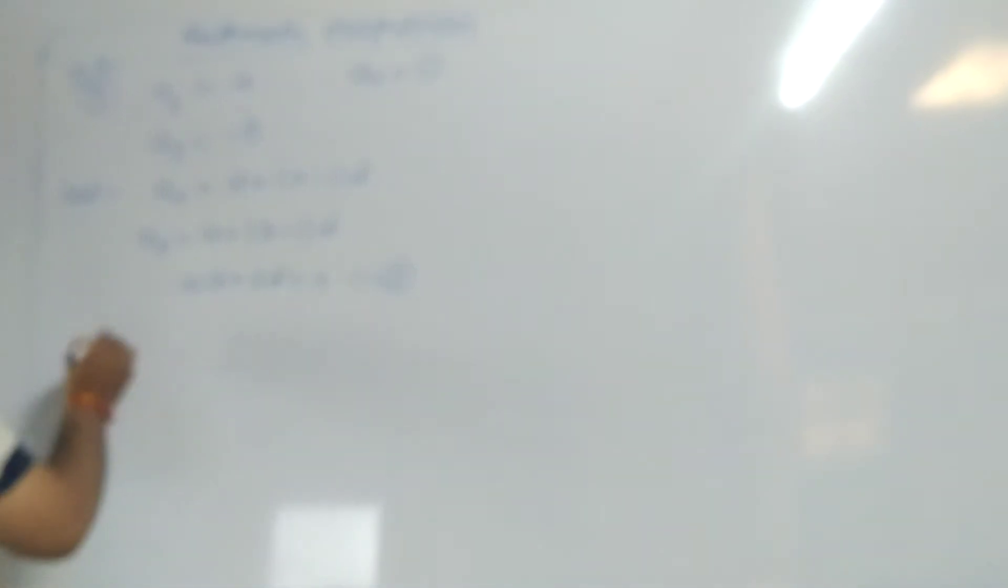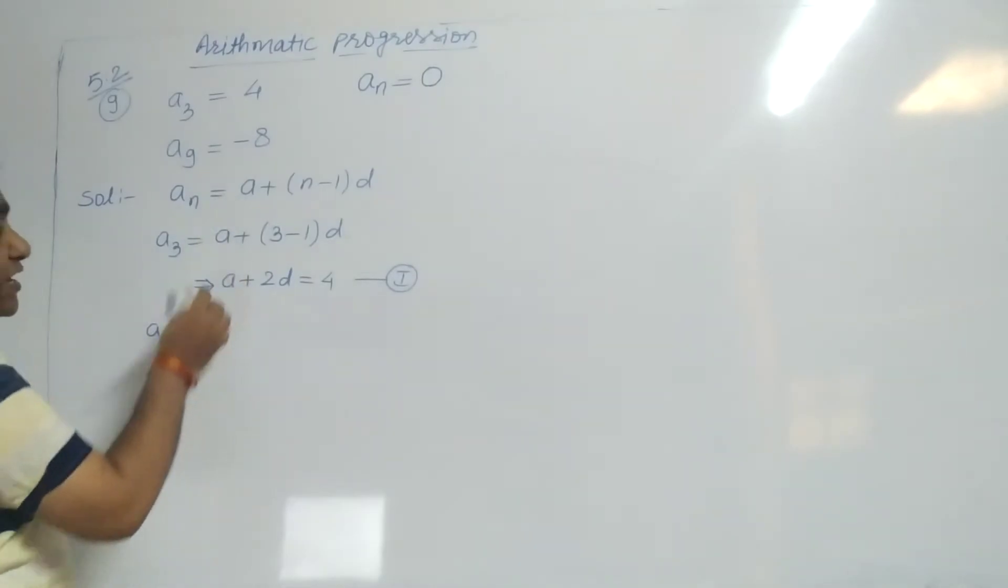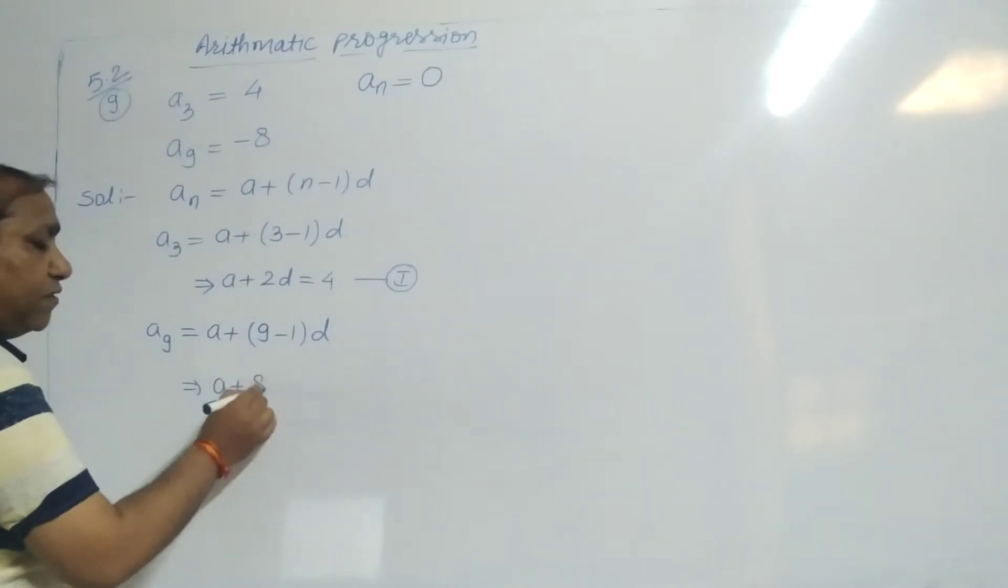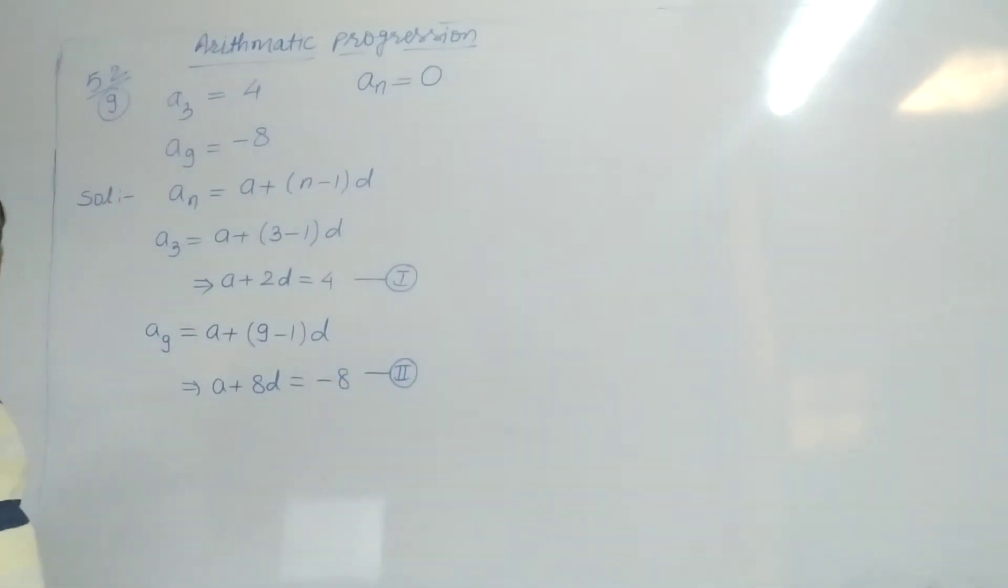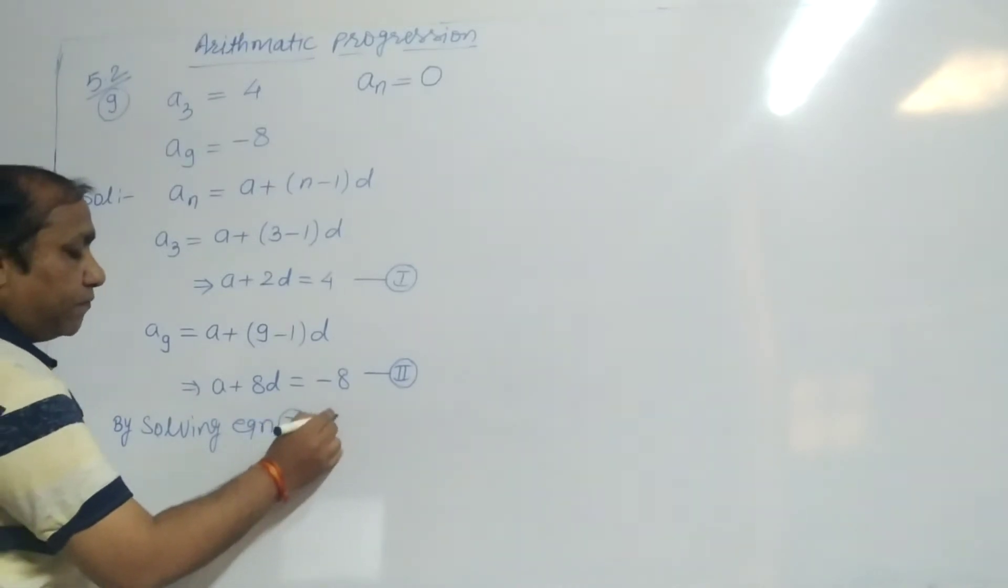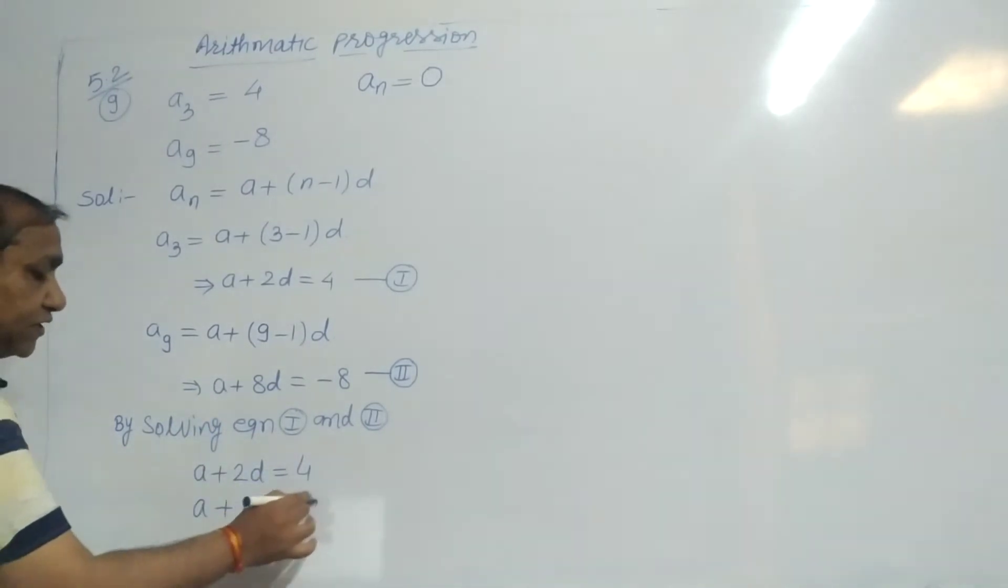Now we put A9. A9 equals A plus 9 minus 1 into D, which is A plus 8D equals minus 8. Now we have to solve equation 1 and 2. By solving equations 1 and 2, A plus 2D equals 4 and A plus 8D equals minus 8.